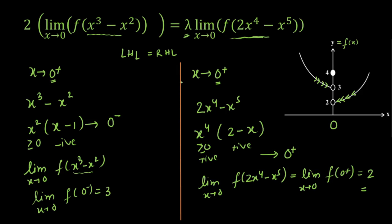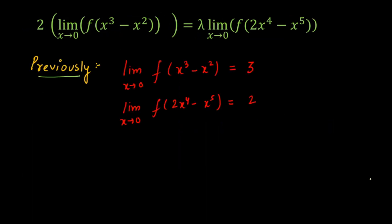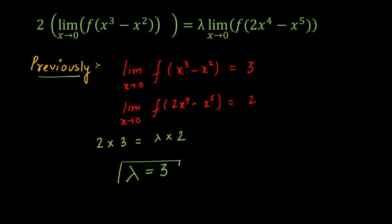In the previous slide, we evaluated both limits: limit x→0 of f(x³ − x²) = 3, and limit x→0 of f(2x⁴ − x⁵) = 2. Now plugging these into the original equation: 2 × 3 = lambda × 2, which gives 6 = 2λ. Therefore, the value of lambda is 3, and that is our final answer.